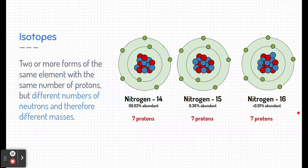Nitrogen, as we saw in the previous slide, has seven protons, and that never changes. That's what makes these all nitrogen.